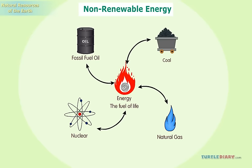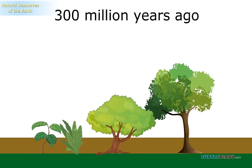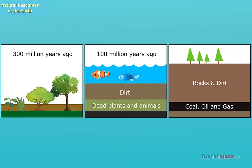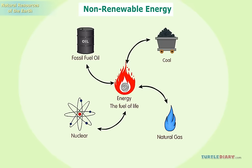But some resources take a very long time to make. We have to be more careful with these. Coal and oil were created from plants and animals that lived very long ago. They died and were buried under the earth. After millions of years, they became coal and oil. Non-renewable resources are those resources which take time to be replaced.